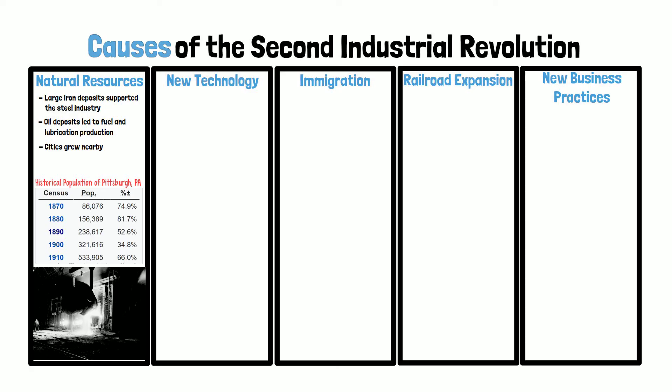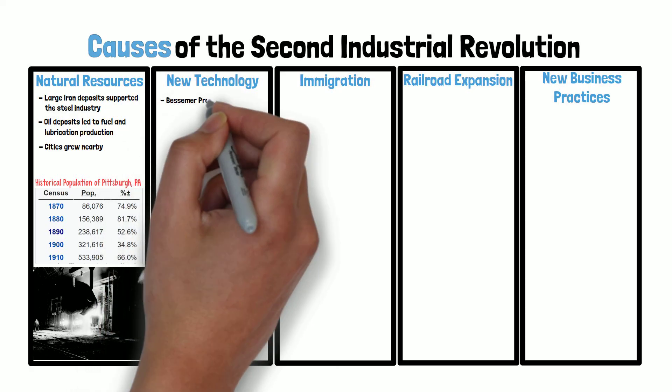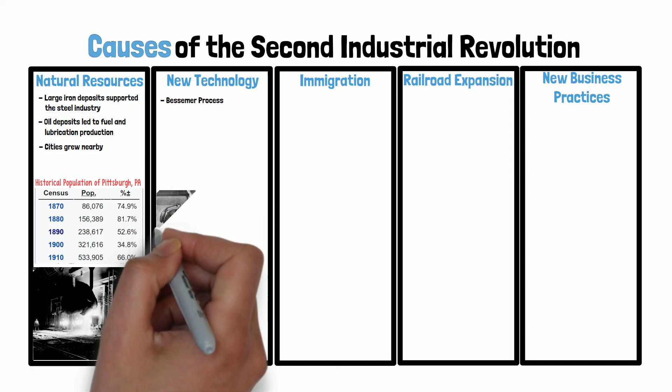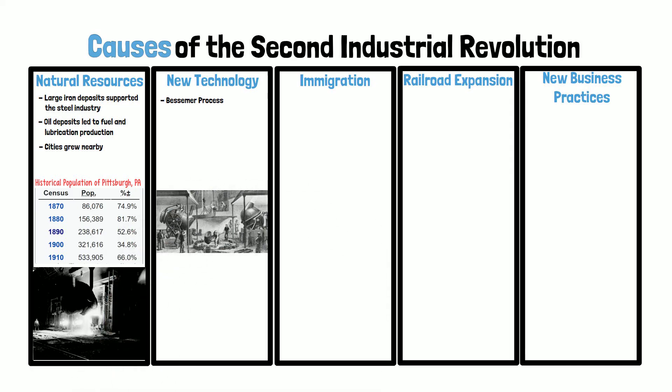New technologies also supported the Second Industrial Revolution. An important one was the development of a new, fast way to process iron into steel using heat. This process was developed by Henry Bessemer and named after him: the Bessemer Process.